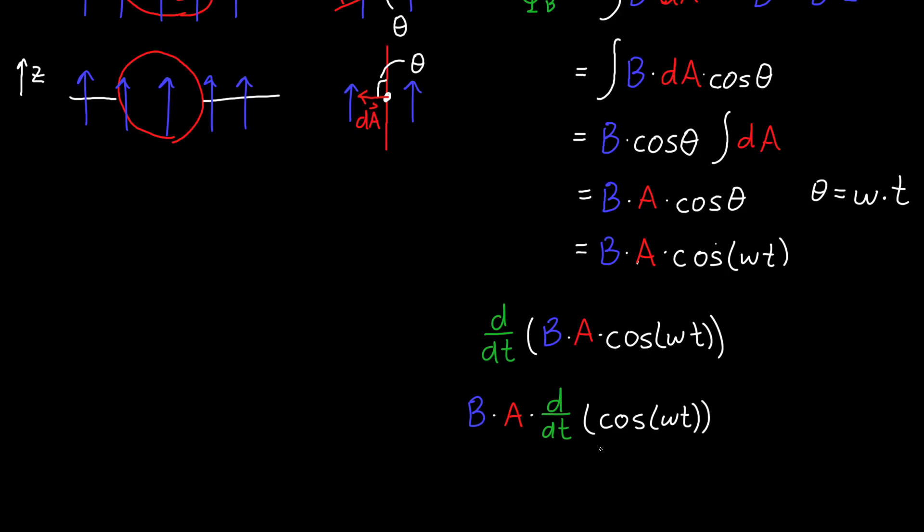So B times A times the time derivative of cosine omega t. And so you can either memorize this or look it up. Either one is fine. But the time derivative of cosine omega t is omega times negative sine of omega t. So all together we've got B times A times omega times negative sine of omega t. This is my derivative of the magnetic flux versus time.